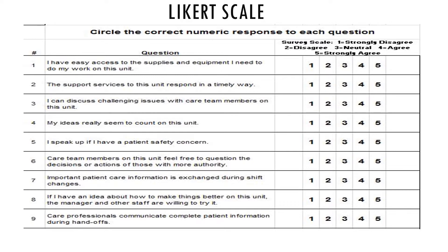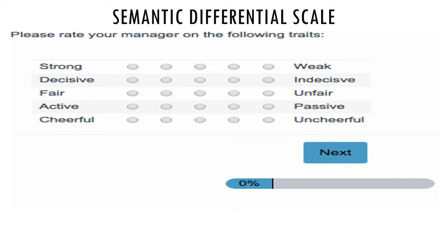What is the Semantic Differential Scale? The survey answering options are placed on opposite adjectives at each end. It is a type of rating scale designed to measure the quantitative meaning of objects, events, and concepts. The connotations are used to derive attitudes towards the given object, event, or concept, and that is the use of the Semantic Differential Scale.